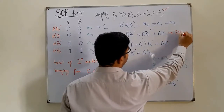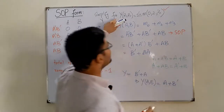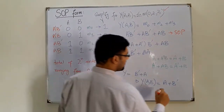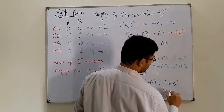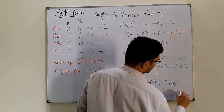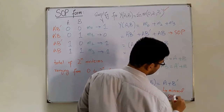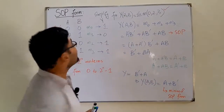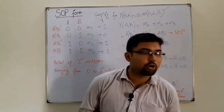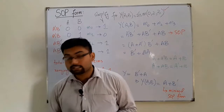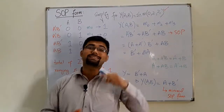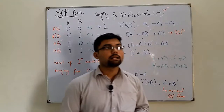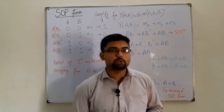This minimal SOP form is obtained from the truth table or from the summation of minterms notation. The reduced logic expression is the minimal SOP form. We're done with SOP form — in the next lecture we deal with the second standard form: the Product of Sums form. See you soon, inshallah.